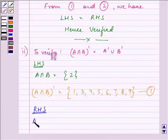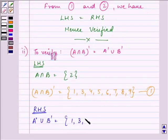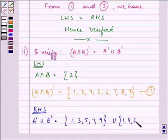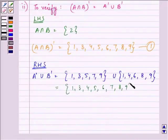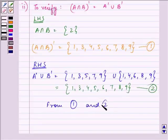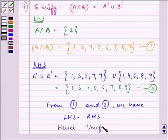Now for the right hand side, we need to find A'∪B'. A complement has elements {1, 3, 5, 7, 9}, union B complement which has elements {1, 4, 6, 8, 9}. The result of their union will be {1, 3, 4, 5, 6, 7, 8, 9}. Let this be the second result. From 1 and 2, LHS equals RHS, and we can write: hence verified.